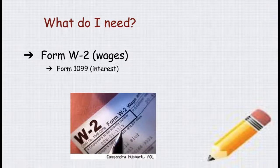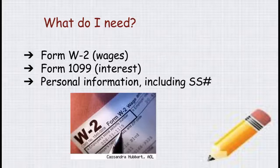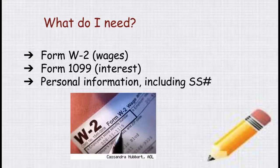So what do you need? You need to gather your W-2 from the different jobs you have — these are sent out by your employer — and any 1099 that shows interest on it. Now you may not receive a 1099 even though you earn some interest from a bank account; it depends on how much you earned, but you need to keep track for your tax return. Also make sure you have all your personal information, especially your social security number.